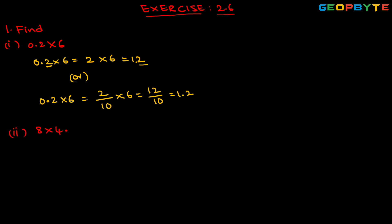8 into 4.6. So 8 into 4.6 — we need to remove the decimal point. If we remove the decimal point, we get 46. Multiplying 8 and 46 gives 368. There is only one digit to the right of the decimal point in 4.6, that is 6. So we need to move from rightmost position to the left and place the dot, giving us 36.8. The result of 8 into 4.6 is 36.8.